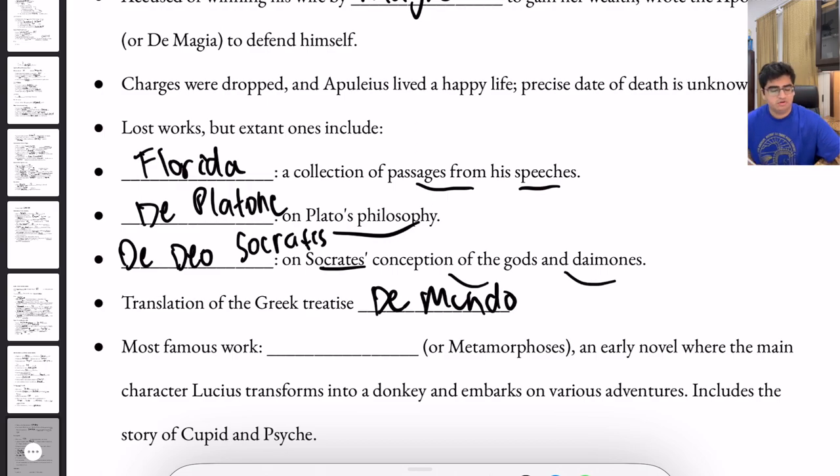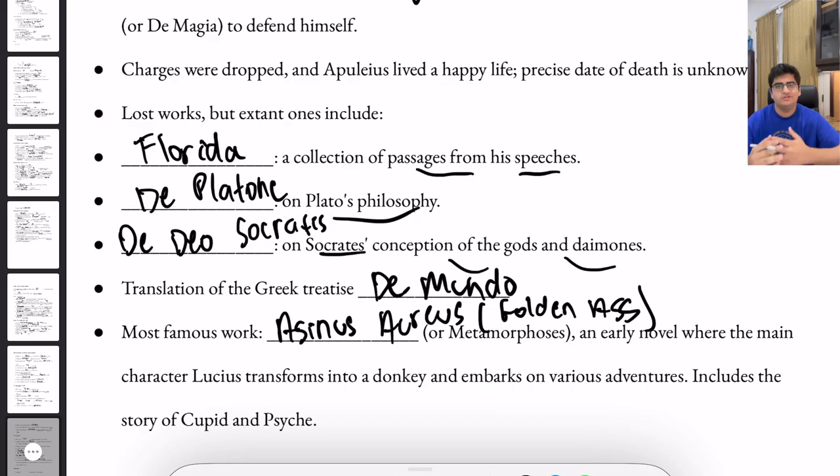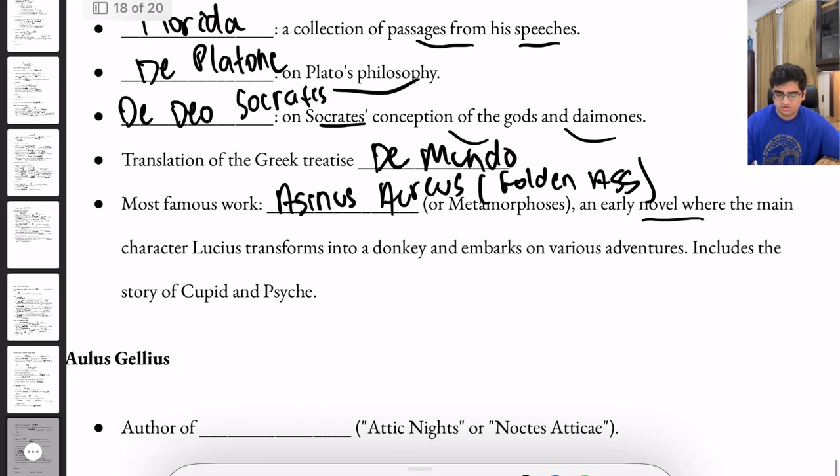His most famous work, the Asinus Aureus, or the Golden Ass, or also the Metamorphoses, was an early novel where the main character, Lucius, transforms into a donkey and embarks on various adventures. This includes the story of Cupid and Psyche.